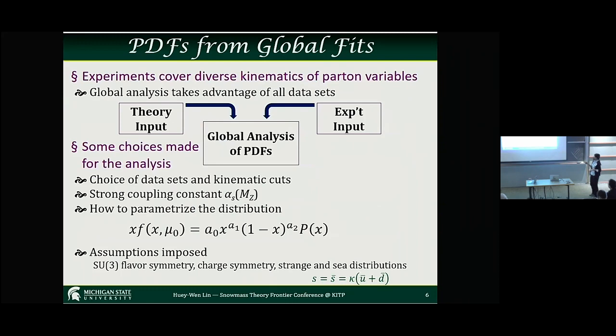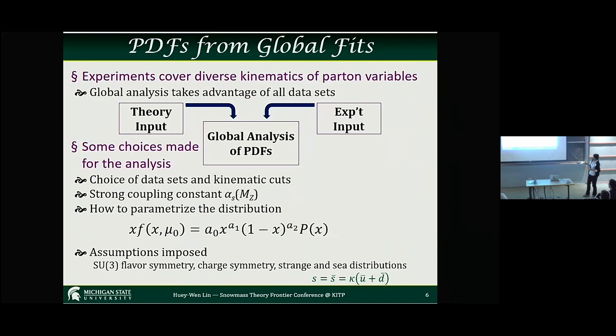Unfortunately, there's no good way to really combine all this data. Sometimes you have very clean data; that's great in certain regions. But the global fit is not just coming from the experiment — you also require the theory input. People are really talking about when we move to the next decade, the theory uncertainty should also be quantified. Sometimes we have to choose data sets and sometimes when data are really scarce, such as for strange quark measurements, it can be really difficult to get a good global fit for that particular flavor PDF.